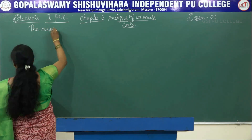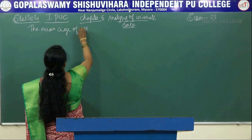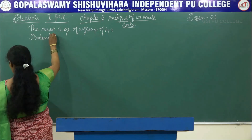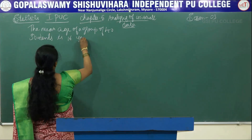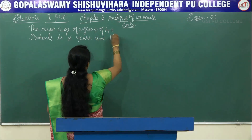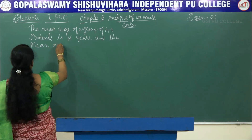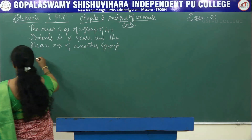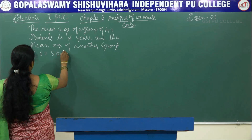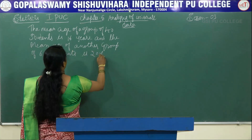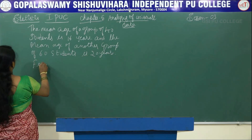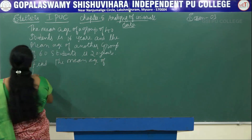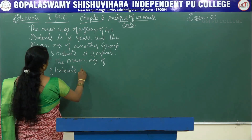The mean age of a group of 40 students is 16 years, and the mean age of another group of 60 students is 20 years. Find the mean age of 100 students together.